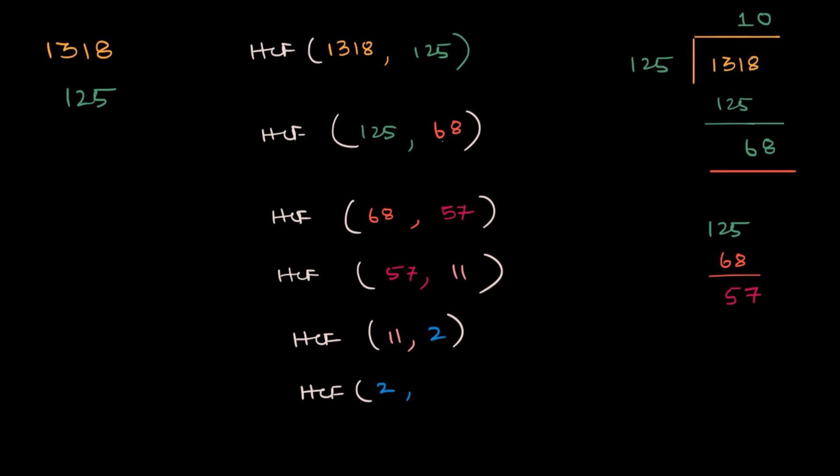Now why I said, oh my God, was because I just noticed that we finally arrived at a case where the highest common factor is just 1. Because now you'll ask, is 2 divisible by 1? Yes, it is. Any number is divisible by 1. So the HCF is actually 1.